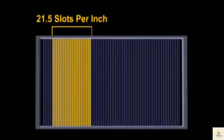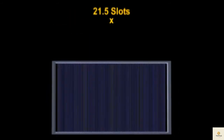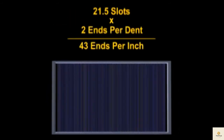The reed number of a reed is the dents per inch. Therefore, if a reed has a number of 21.5, this means there are 21.5 slots per inch in the reed. For example, if the yarns are reeded two ends per dent, then there would be 43 ends per inch in the reed. This is calculated by multiplying the two ends per dent by the reed number of 21.5, which equals 43. Three ends per dent would mean there are 64.5 ends per inch in the reed.